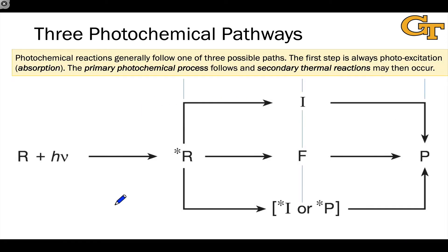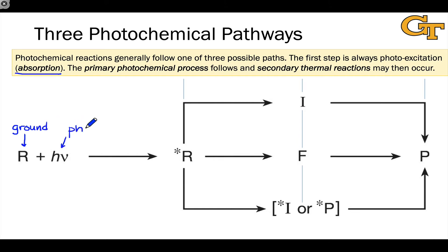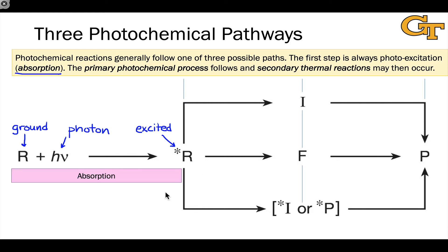We've seen this figure before as a general representation of a photochemical reaction mechanism, and we can divide it up into three stages using the lines through the figure shown here. The first stage is always absorption of a photon by some molecule, represented as the combination of a ground state molecule R with a photon, represented as hν — Planck's constant H times the frequency nu is the energy of the photon — and this generates R*, the excited state of R, which has some excess energy relative to the ground state. This is what we call absorption, and it's key to any photochemical process.